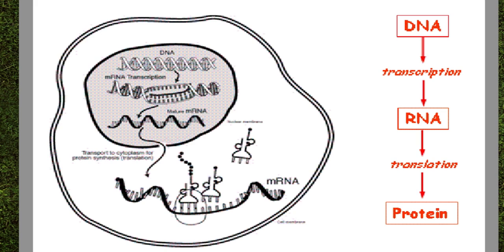DNA is too big and it's in the nucleus — it can't get out of the nucleus. So we're going to talk about the process of how you get the information from the DNA to actually produce a protein. This DNA to RNA to protein is the central dogma of molecular biology.